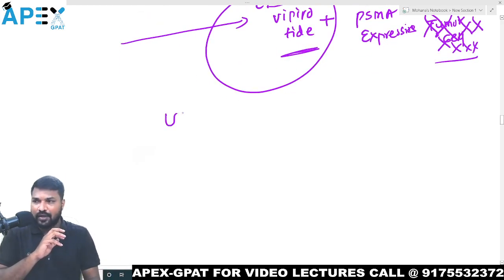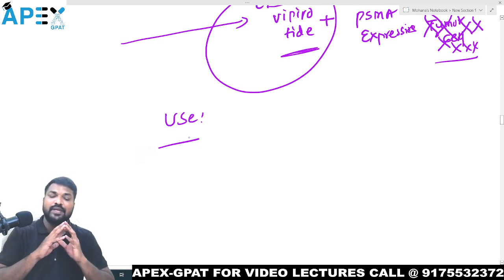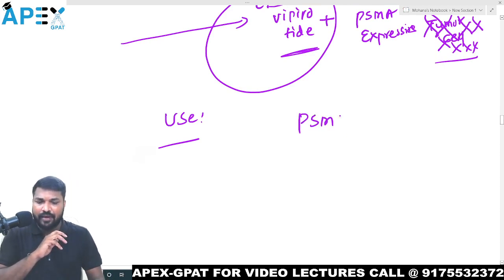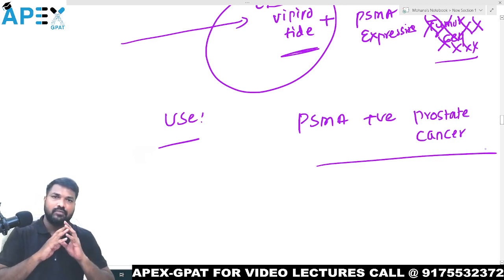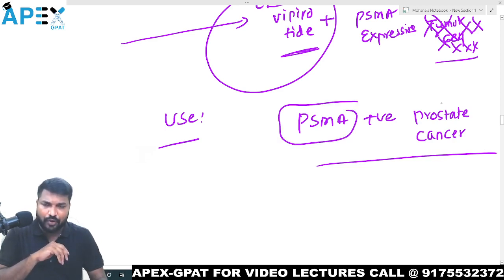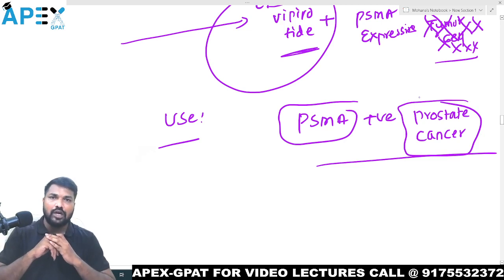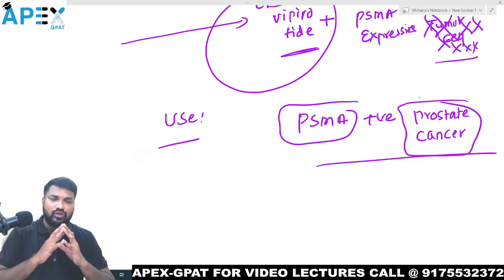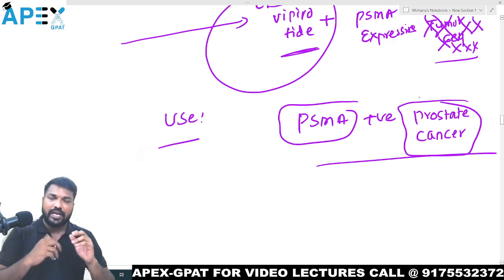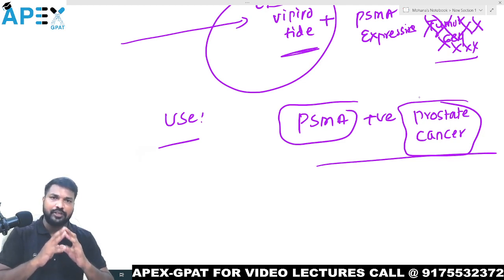The specific use of this drug is PSMA-positive prostate cancer. So if you are getting prostate cancer due to PSMA, we give Lutetium-177 vipivotide tetraxetan. That is all about Part A of USFDA approved drugs. In the next video, we will discuss other USFDA approved drugs of 2022. Thank you.